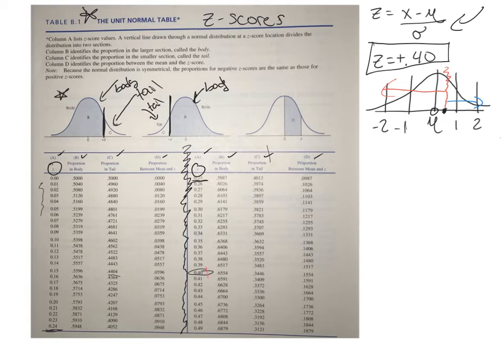If I have a z of 0.4, what is the proportion in the body? You can tell this has the bigger part of it. So this would be my body. My proportion in the body would be 0.6554.